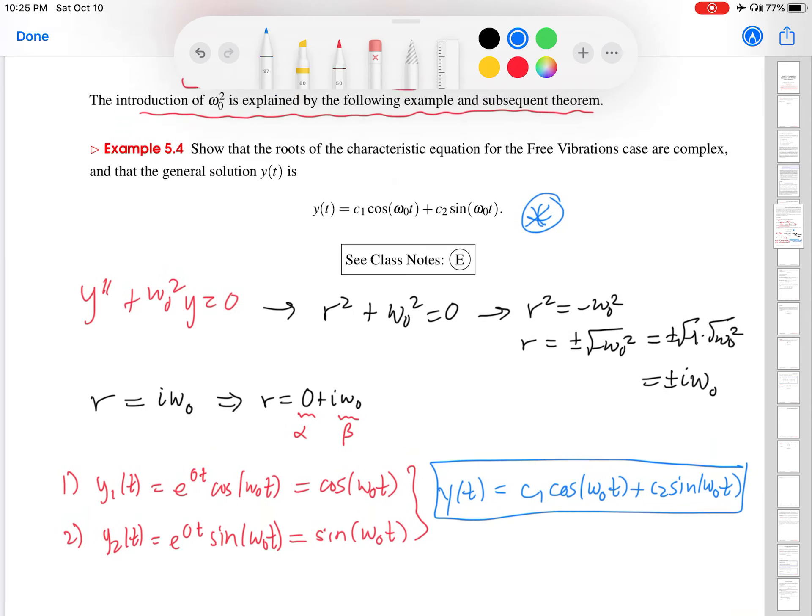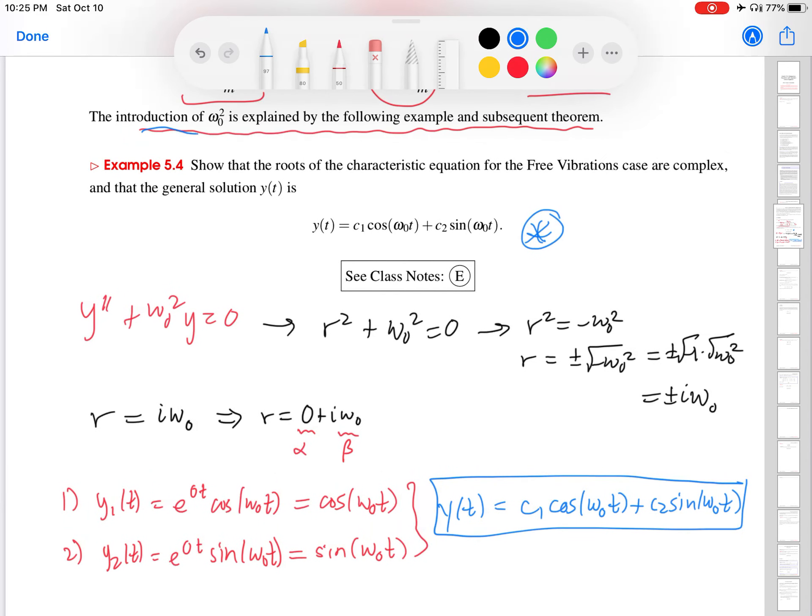And I will end with a very quick return to why we introduced omega naught squared to begin with. Well, notice that the general solution is a linear combination of sinusoidal functions whose angular frequency is omega zero, right? So that is a clue as to what this quantity omega zero represents. It represents the angular frequency of the oscillation of this system. And again, we'll explore that more in the next video.